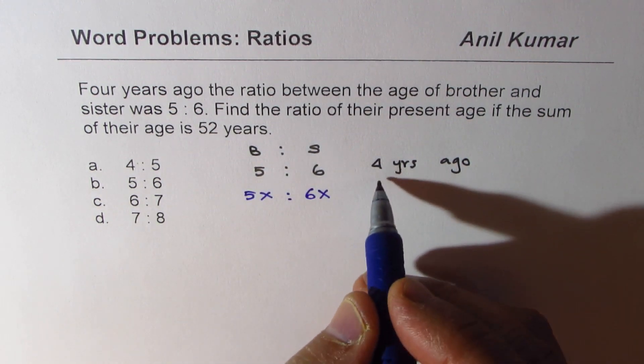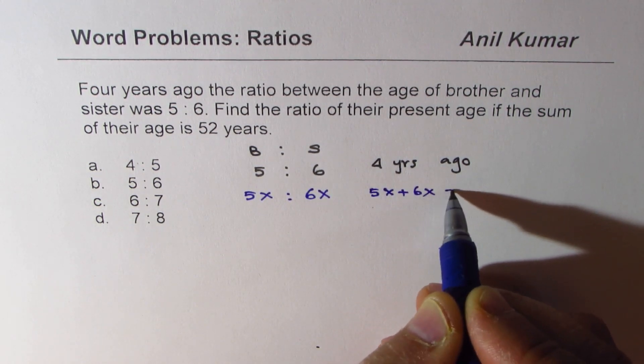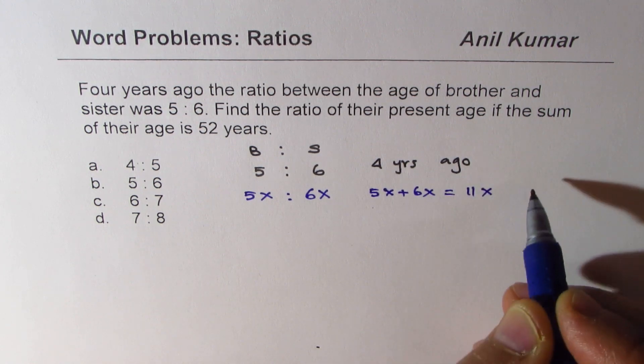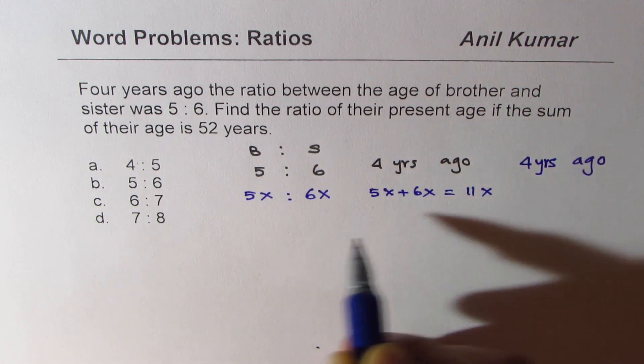So what is their sum? Sum is 5x plus 6x which is 11x. This is four years ago, right.